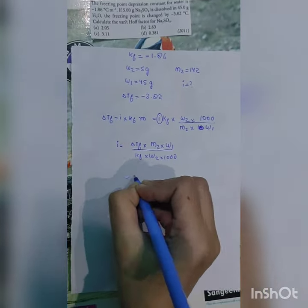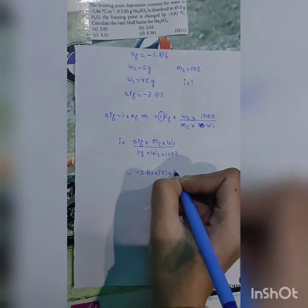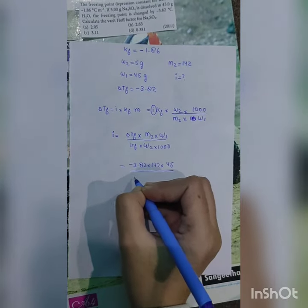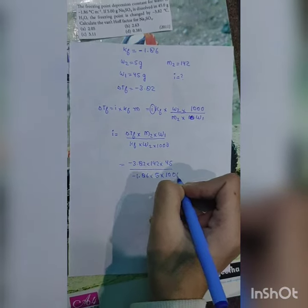So this value, delta Tf is minus 3.82, M2 is 142, and W1 is 45, divided by Kf which is minus 1.86, multiplied by W2 which is 5, multiplied by 1000.